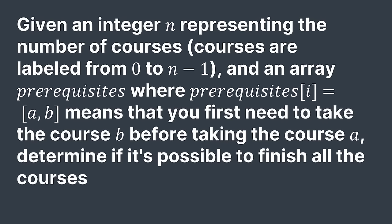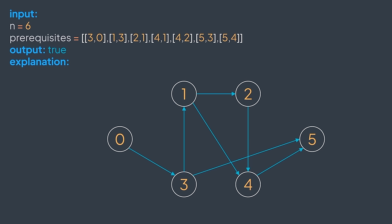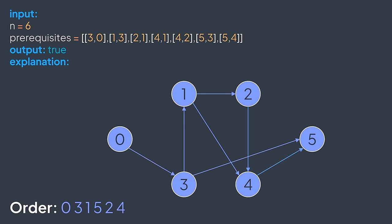Welcome back. In this lecture, we'll solve the course schedule problem. We have n courses labeled 0 to n-1 that we need to take, but some are prerequisites to others — we cannot take a course before taking its prerequisite. We must determine if it's possible to finish all the courses. We're given an integer n and an array prerequisites where prerequisites[r] = [a, b] means you must take course b before course a. For example, with a certain input the output is false — there's a dependency cycle: to take course 3 we need course 0; for course 0 we need course 1; for course 1 we need course 3 — impossible.